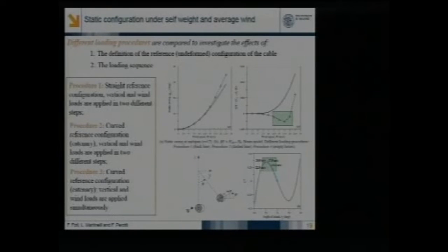The next step is to consider the static configuration under self-weight and the static load due to the average wind. To this end, we started by comparing different loading procedures to investigate the effect of the definition of the reference, the undeformed configuration of the structure, and the loading sequence used to apply the self-weight and the average wind. We distinguish between three procedures. The first one starts from a straight reference configuration, while procedures two and three start from a curved configuration evaluated as the inextensible catenary. Procedures two and three deliver the same results. In this case, the sequence of application of vertical and wind loads is not significant. So in the following, we will compare essentially procedure one with procedure two.